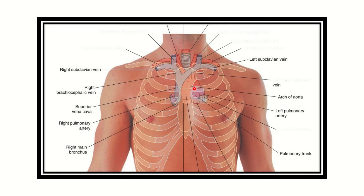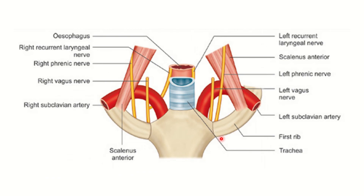Here we can see the sternal angle and different structures such as the right subclavian vein and superior vena cava. Here we can see the right vagus nerve and the right recurrent laryngeal nerve. The right recurrent laryngeal nerve does not enter into the thorax at this level — it courses under the subclavian artery above the chest. So there is no risk of injury to the right recurrent laryngeal nerve.